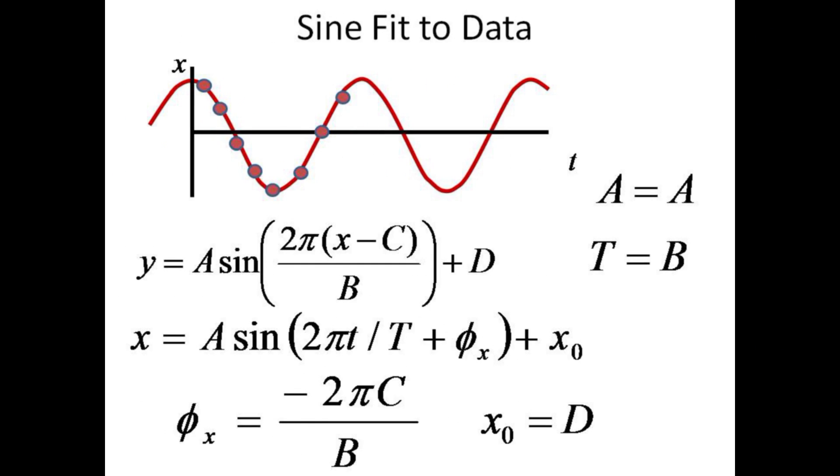The sine curve fit yields four parameters. The parameter a corresponds to the amplitude of each wave. b represents the period of the oscillation. The phase of the wave is given by minus two pi times c over b. The equilibrium position will be given by d.